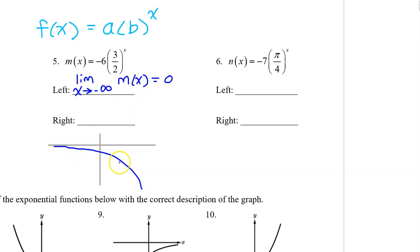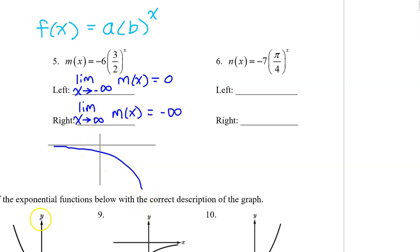As we head towards the right, m of x is falling. Therefore, the limit as x approaches positive infinity is negative infinity.